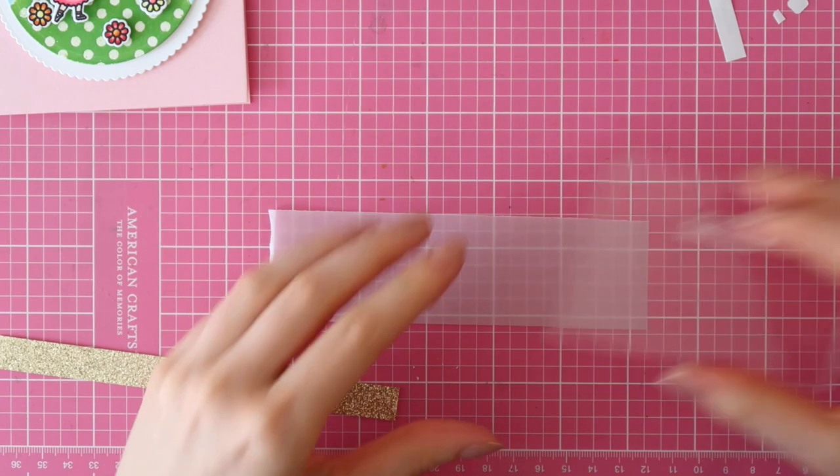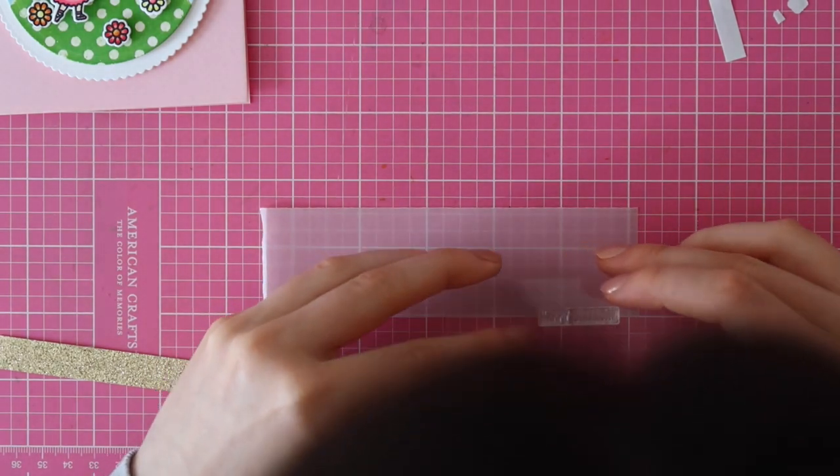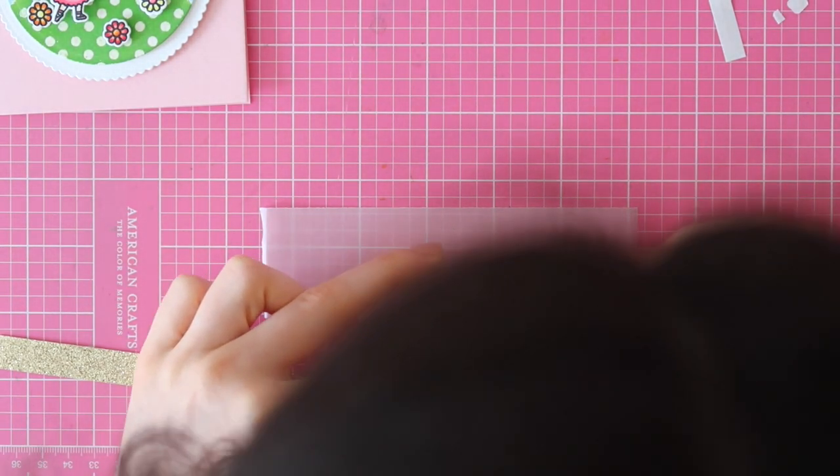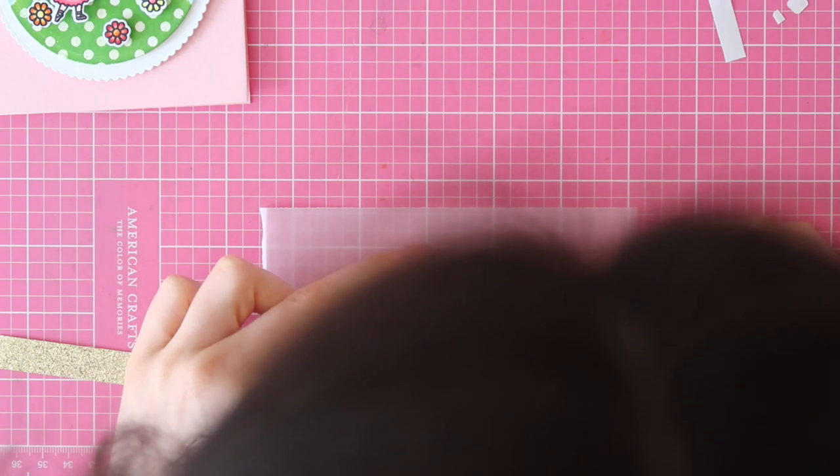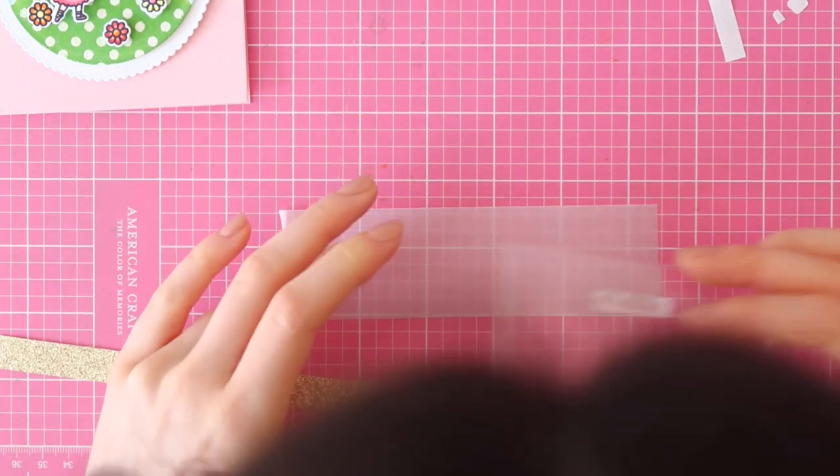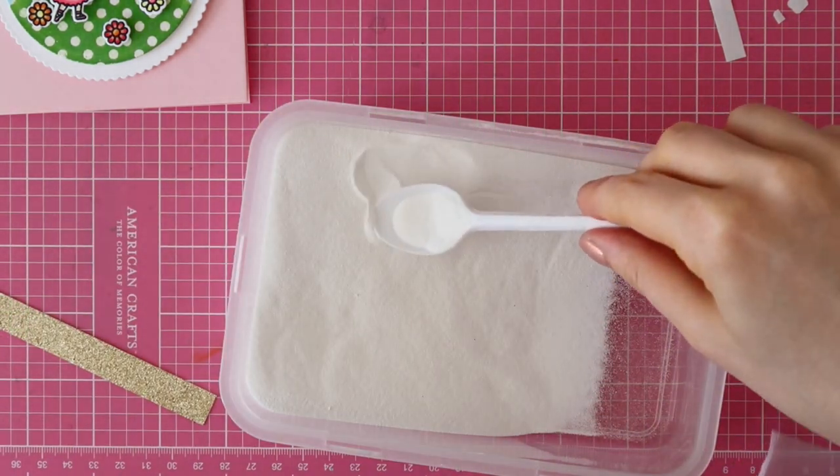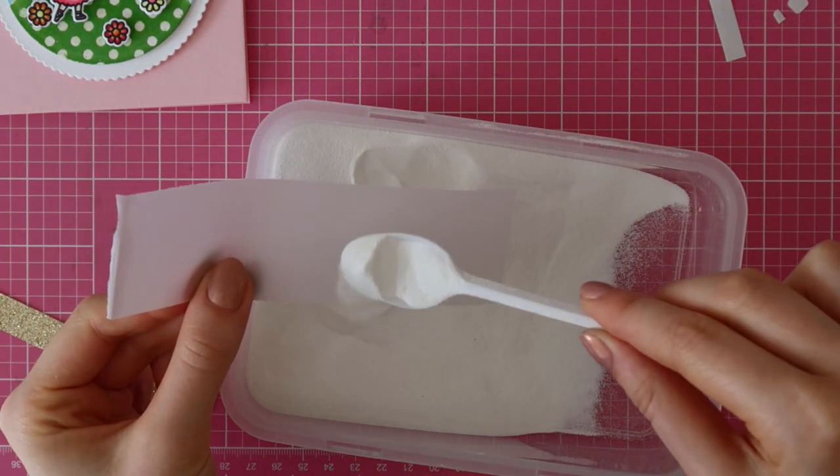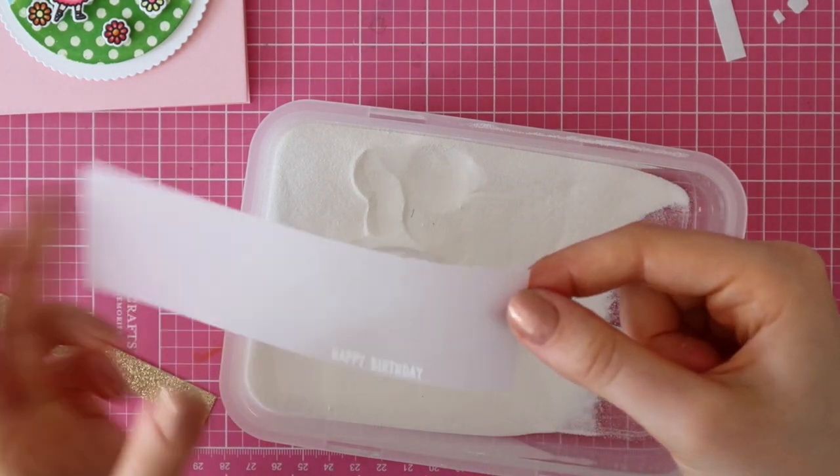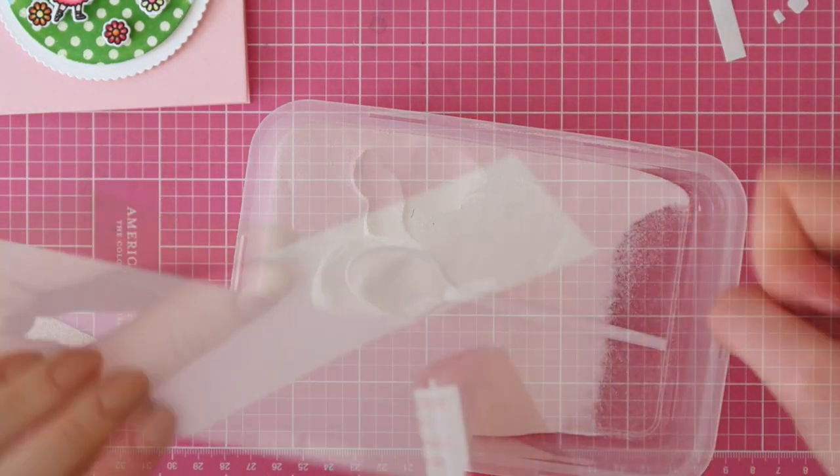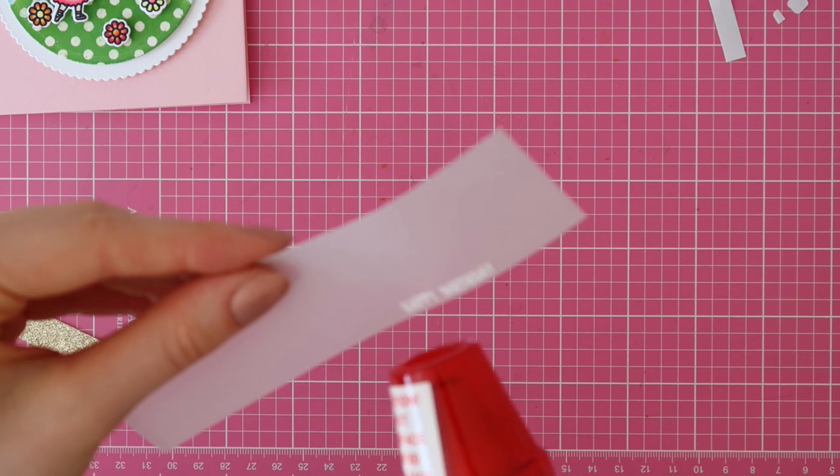For my sentiment, I grabbed a small piece of vellum and I prepped that with some kitchen flour to remove any static cling. Then I stamped a sentiment from the Tiny Dancers Stamp set on there using the WOW Ultra Sticky Pad. And now I'm sprinkling on the Opaque Bright White Super Fine Embossing Powder from WOW.